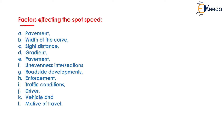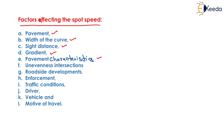The factors affecting spot speed include: pavement condition — if the pavement is not smooth it affects spot speed; width of curve; side distance; gradient — if gradient is very high, spot speed is low; pavement characteristics; unevenness; intersections; roadside developments; enforcement; traffic conditions; driver; vehicle; and motive of travel. All these factors affect the spot speed of the vehicle.